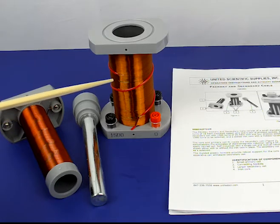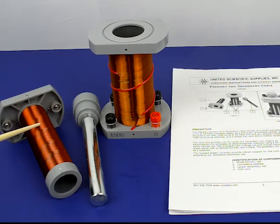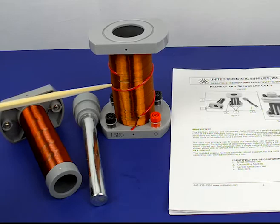The wire on both of these are different. The smaller primary core has 18 gauge wire. The large electromagnetic core has 26 gauge wire.